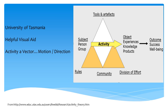One representation that does provide insight came from the University of Tasmania. As you can clearly see in their depiction, the activity performed by the subject actors has an effect on the object, and a subsequent effect on the outcome. To me, the affordance of a vector is present here, which is a suitable metaphor in that activity has both motion and direction.